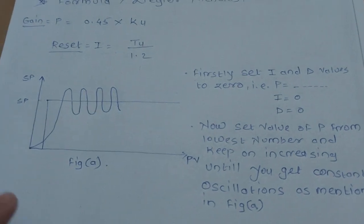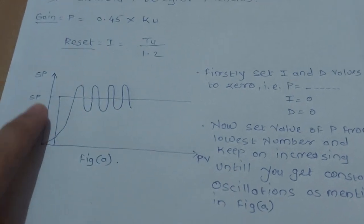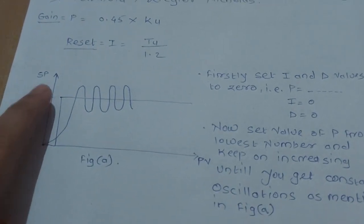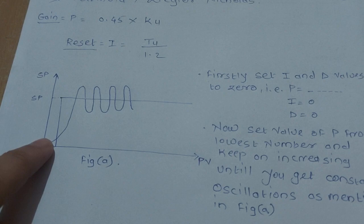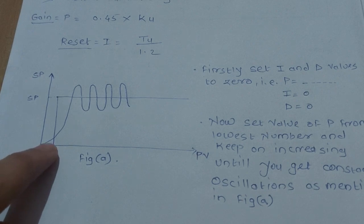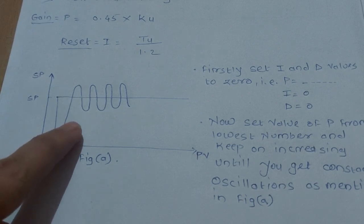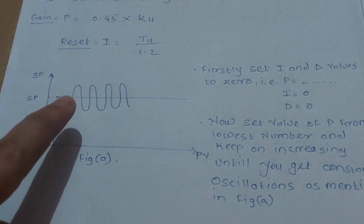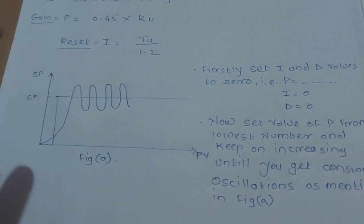Here if you see, when we give the set point and change the parameter P, we will get constant oscillations that we should note.